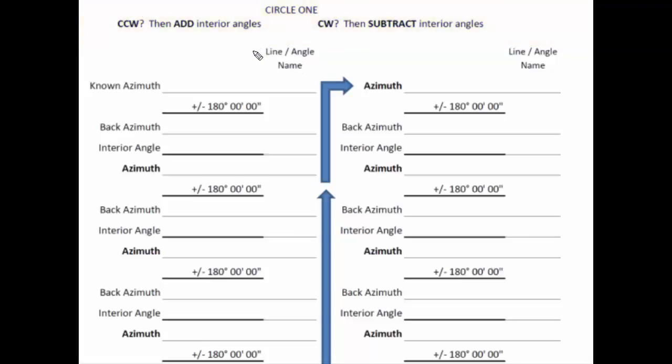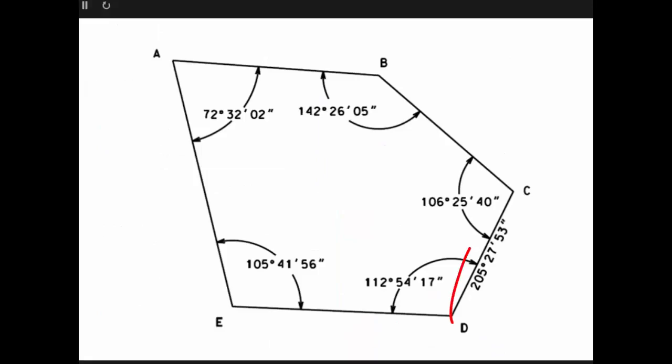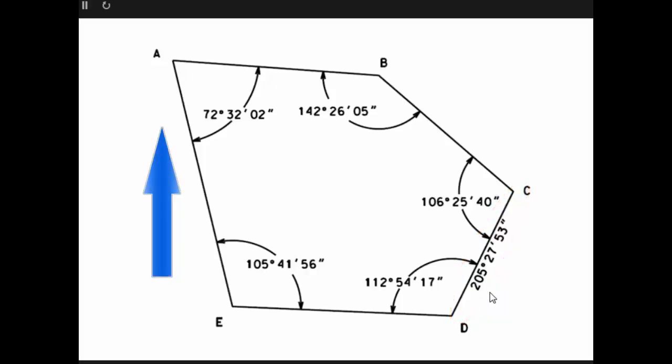So how do we know if we are going counterclockwise or clockwise? Well let's look at our drawing. Here we have an azimuth of 205 27 53. North is at the top of the figure. 205 27 53 is in the southwest quadrant — that is, it falls between 180 degrees and 270 degrees. So that is the direction going from C to D.